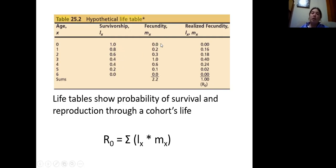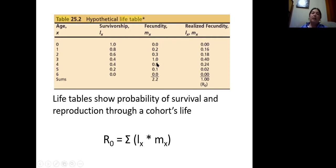Fecundity is the average number of offspring produced by an individual of that age class. At birth you would not expect any offspring since they were just born, so there's zero fecundity. Young individuals — maybe they don't have the resources, they're not very successful — produce very few offspring. There's usually a peak in middle life when the individual is an experienced breeder with access to resources. Towards the end of life you tend to see a drop-off as the animal enters a senescent phase and becomes less reproductively capable.